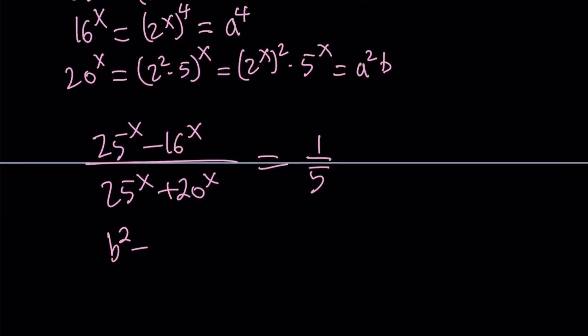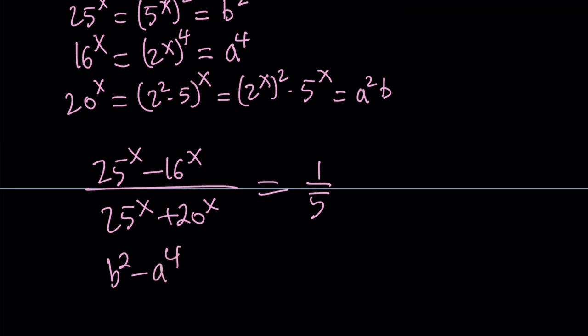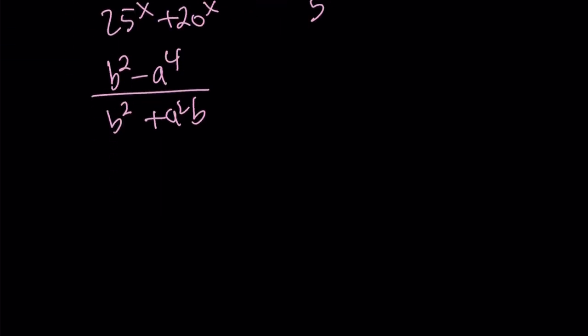We can replace 25 to the power x with b squared, 16 to the power x with a to the 4th power, and b squared again plus a squared b. So this is what we have and we're going to set it equal to 1 over 5.